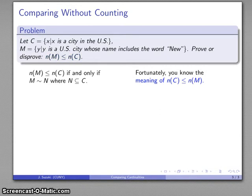Now in order to do that I need to pull up what the definition, what the meaning of cardinality of C less than or equal to cardinality of M is. And there's my if and only if definition. Cardinality of one is less than or equal to the other if and only if M is similar to N, which is a subset of C.